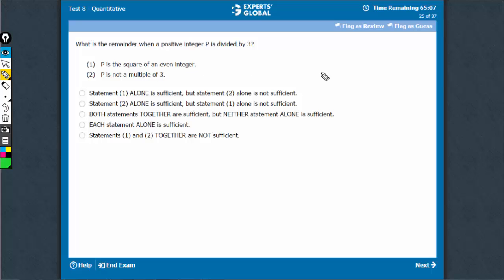We need the remainder when divided by 3, p square of an even number. So, if it is say 2 squared, the remainder would be 1.